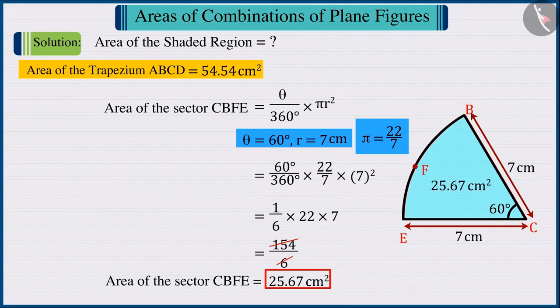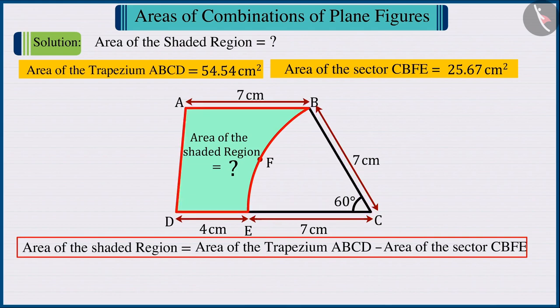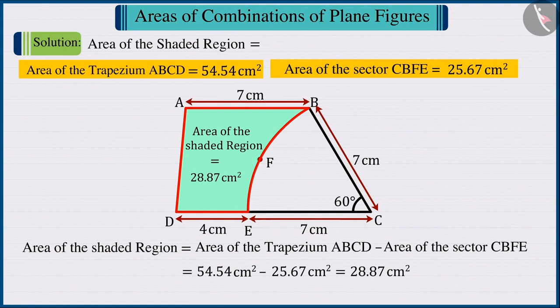Since we have to find the value of the area of the shaded region, we subtract the area of the sector from the area of the trapezium. The area of the shaded region is obtained as 28.87 cm². So, we can say that the area of the shaded region in the trapezium ABCD is 28.87 cm².